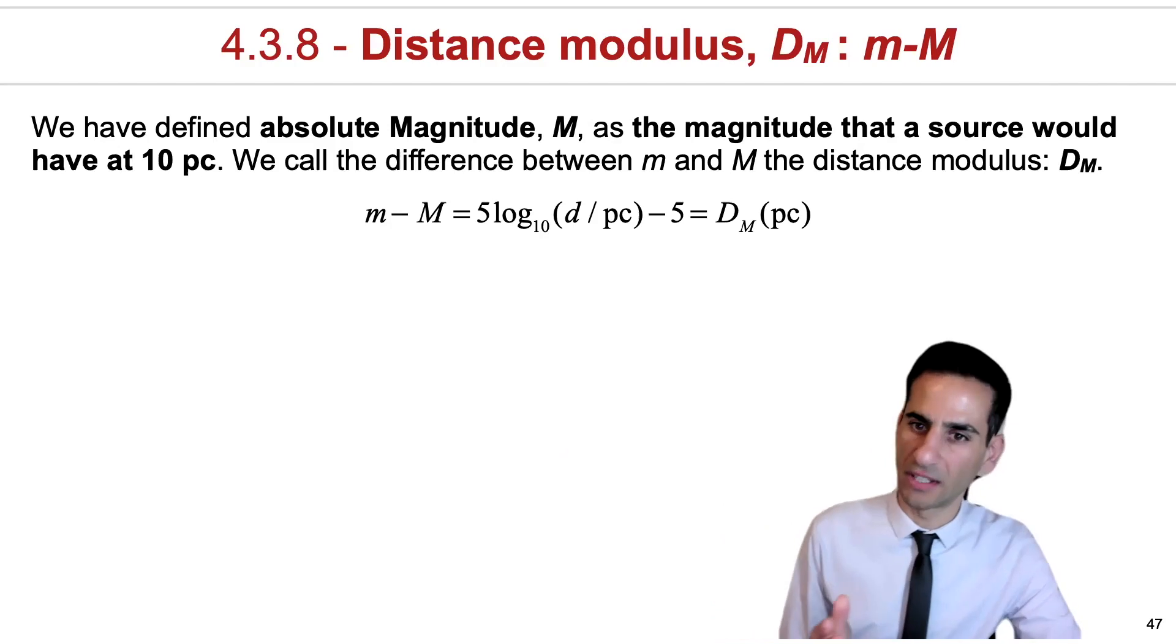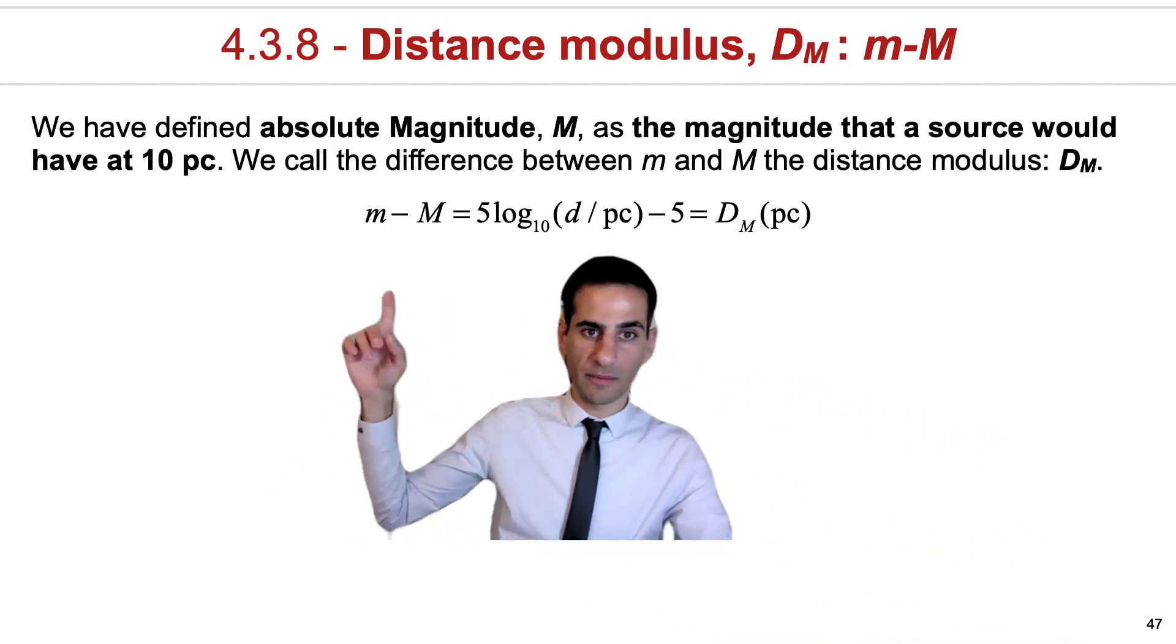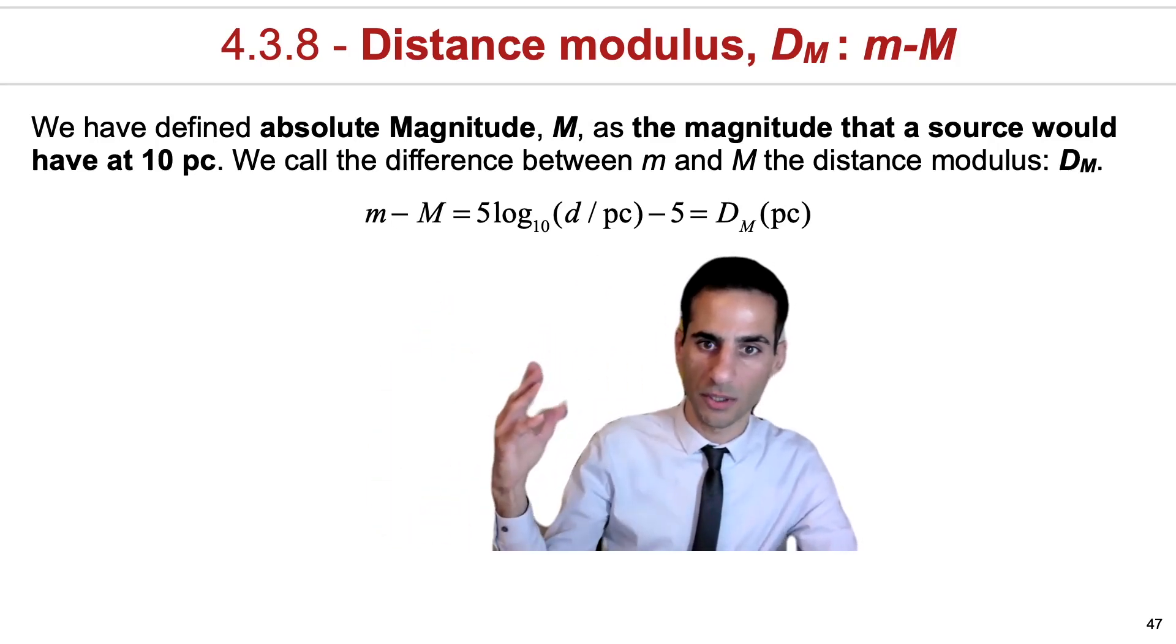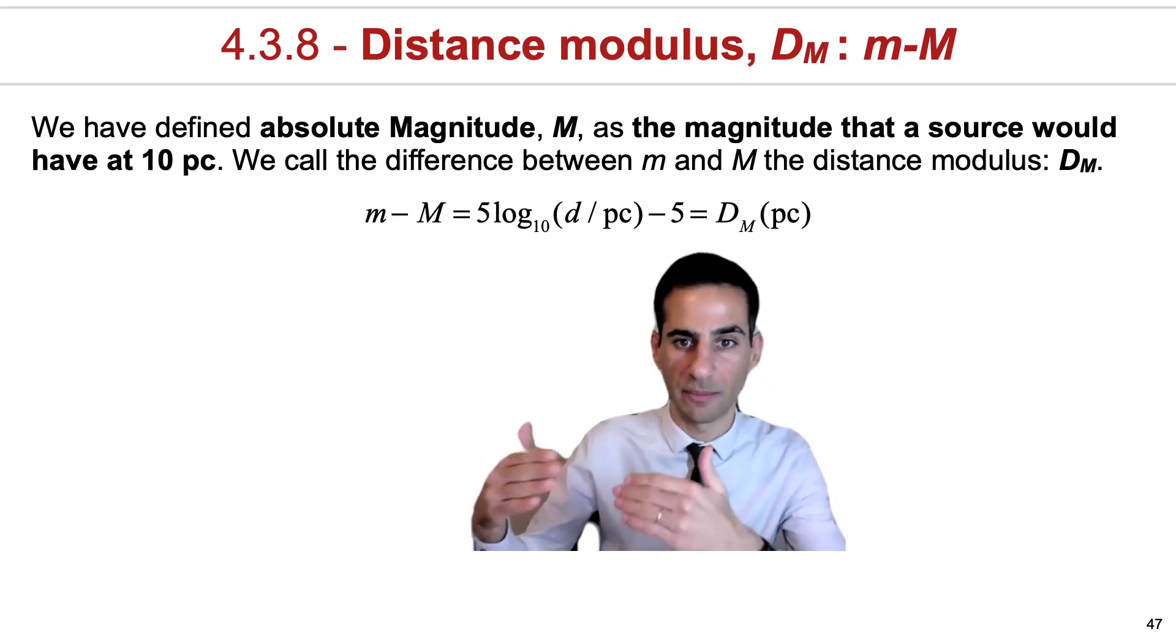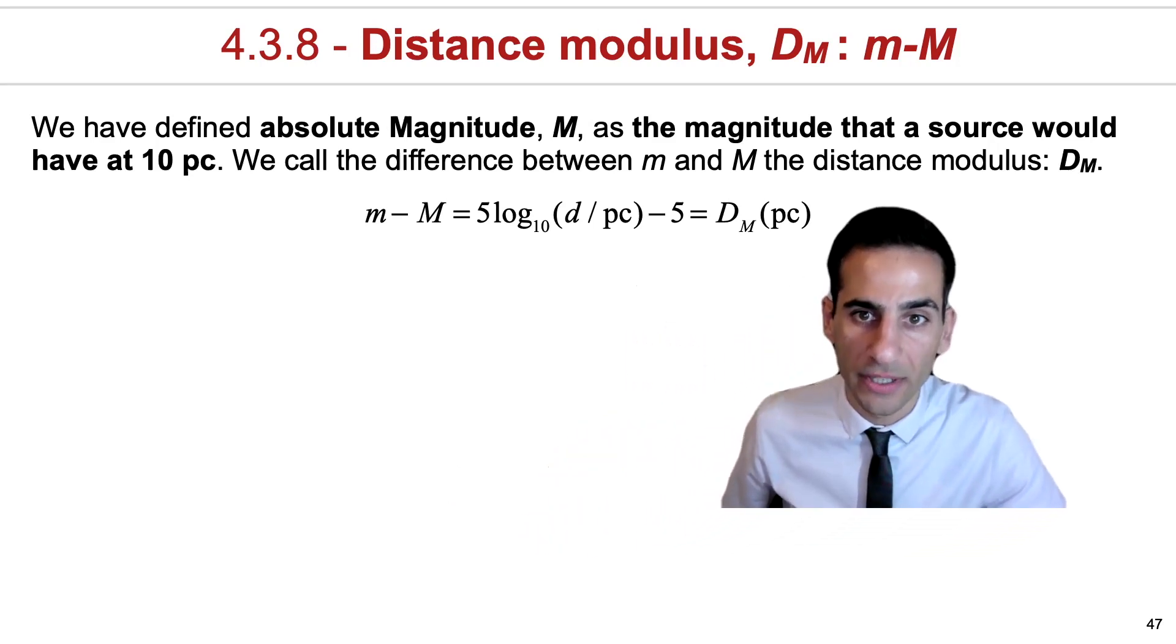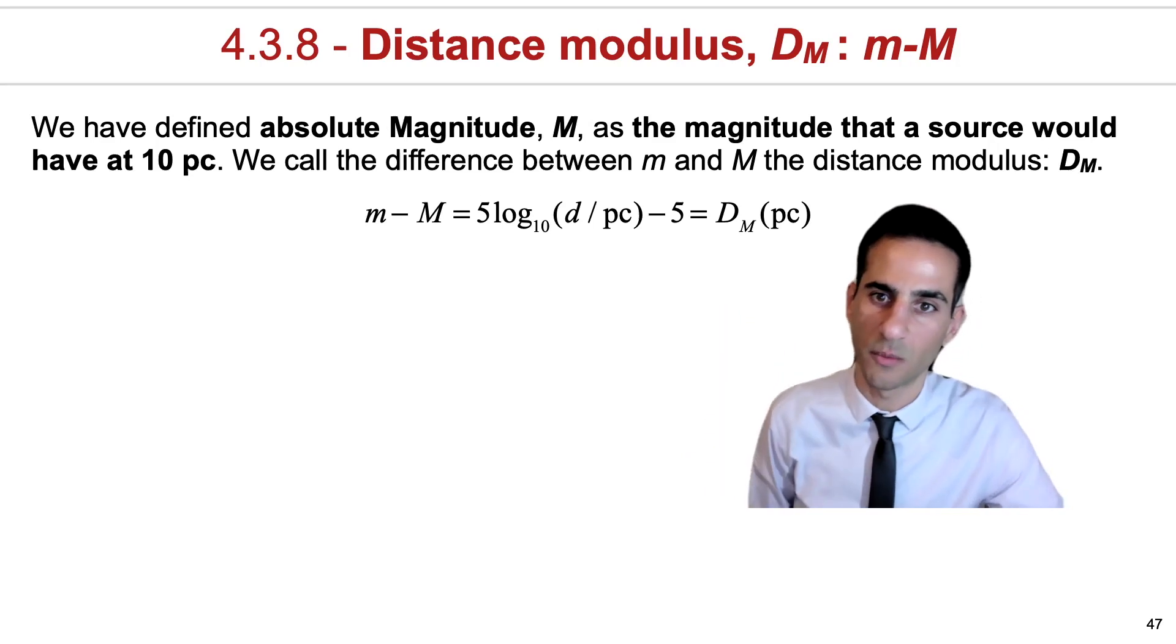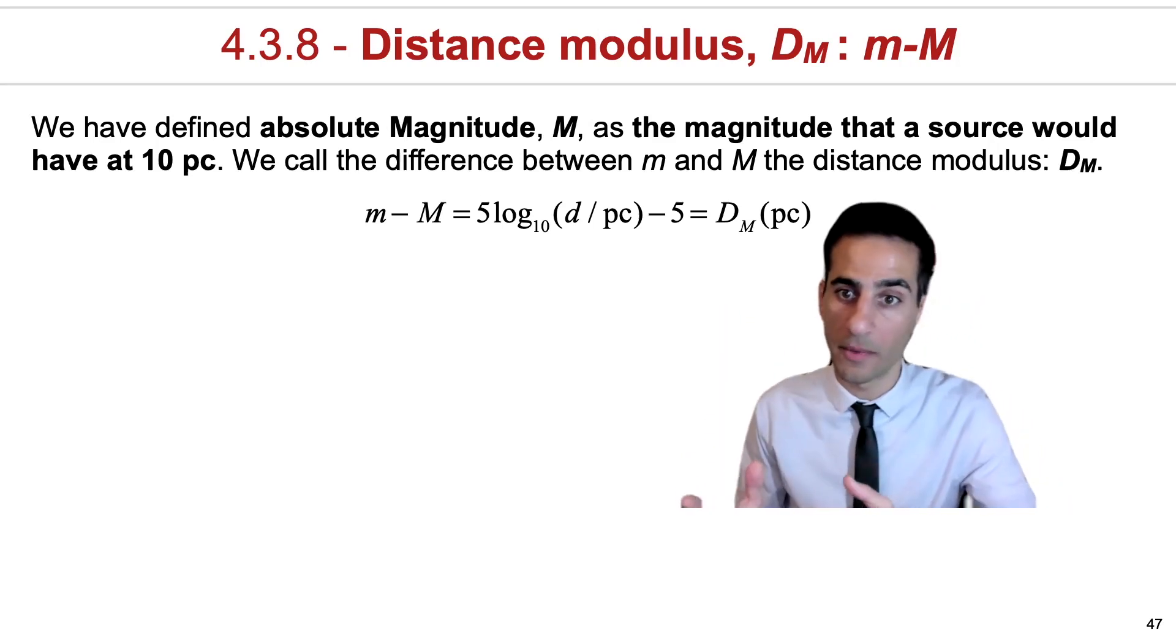Now, because of what we've just seen, then the difference between the apparent magnitude and the absolute magnitude is in a way just a function of distance to the source. That's what sets the difference in value of the apparent magnitude and the absolute magnitude. Because of that, this quantity, m minus M, is actually defined as what is called the distance modulus. So it's essentially the logarithm of the distance in parsec times 5.